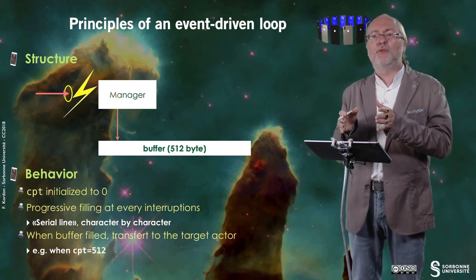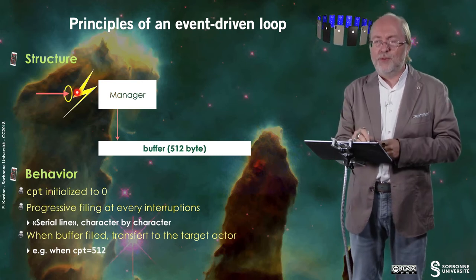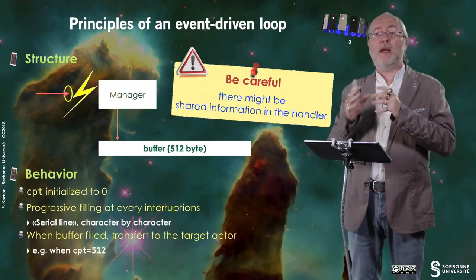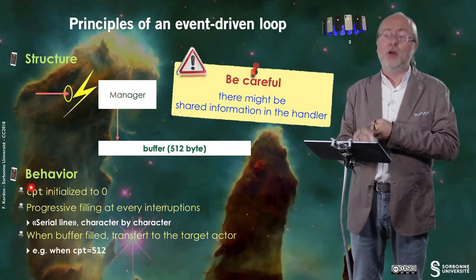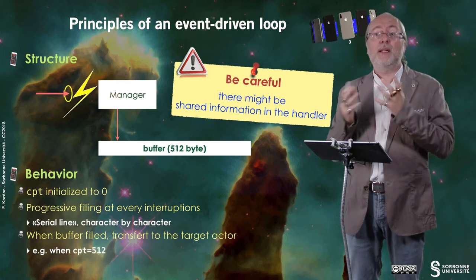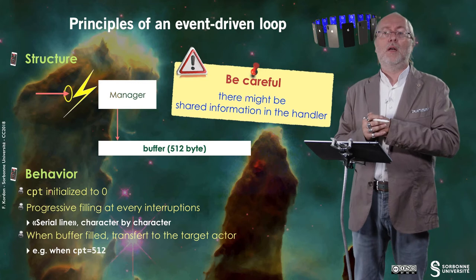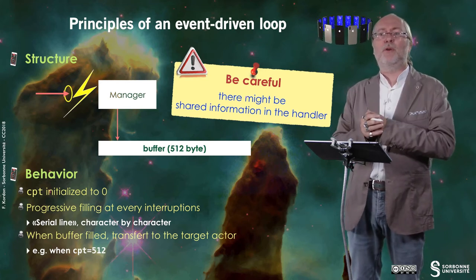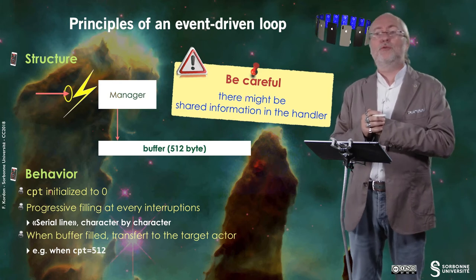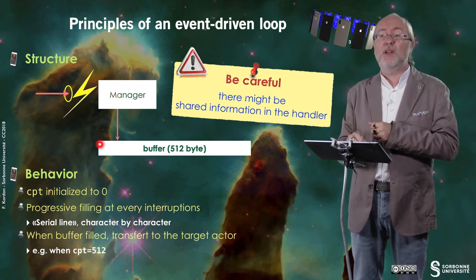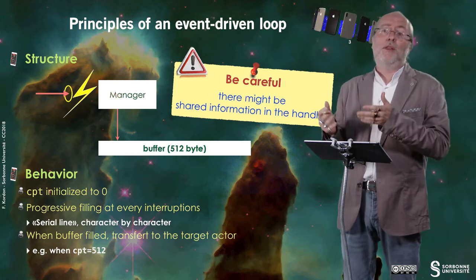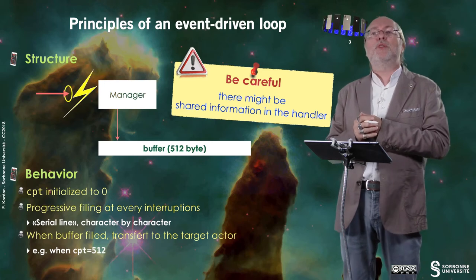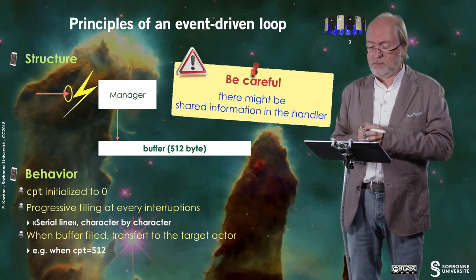The counter will basically move from zero to 512, and then it will be reset to zero, and so on. You see the idea of a loop — the manager corresponds to the body of the loop, but it is executed only if you have an incoming character, or pieces of a frame if you are considering more elaborated networks. Be careful, because there might be information shared by the handler with other actors — typically the counter or the buffer itself. If when you pass it to the other actor, the other actor doesn't treat this buffer immediately, and you've already reset the counter to zero and are still receiving characters, then you are filling this buffer while the other actor thinks there is still information for it. So it's dangerous.